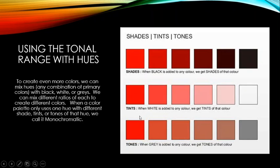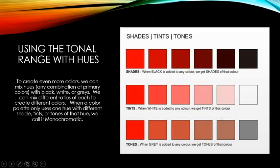When we add gray to a pure hue, those are called tones. Using different types of gray — lighter or darker — produces different effects, giving us a large variety of tones from any single hue just by adjusting the ratio and type of gray used.